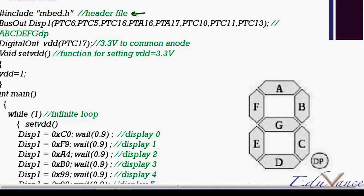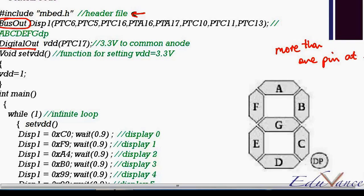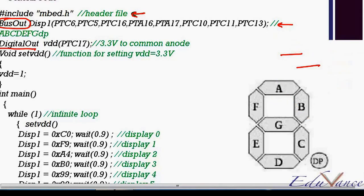Now let's understand the program for operating the seven segment display. First, we need to include the header file: `#include "mbed.h"`. Previously we used the `DigitalOut` function; here we will use a new function called `BusOut`. `BusOut` means if I would like to control more than one pin at a time, I can specify all those pins as part of my bus. So today we learn a new function — `BusOut` — compared to `DigitalOut` used in the previous lab.